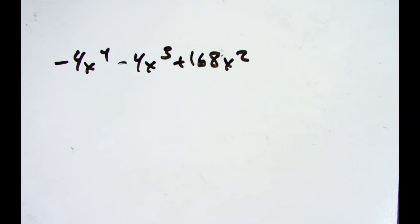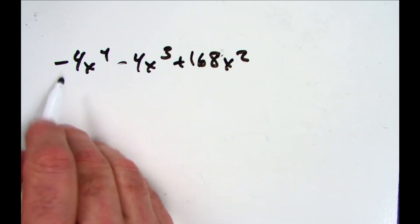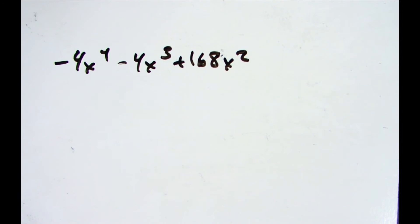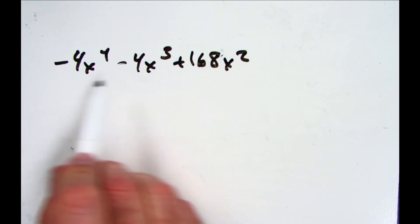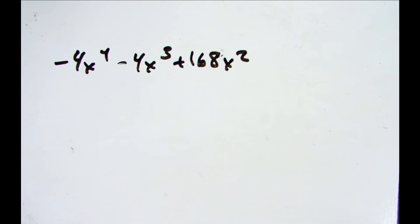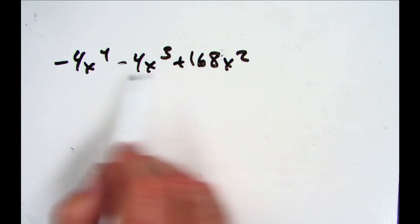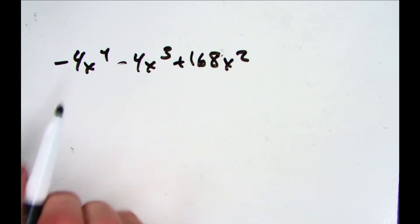Every once in a while we can go a little bit further. Here's our last and scariest looking example: -4x⁴ - 4x³ + 168x². Those numbers are so big they're hard to say. Now let's look: greatest common factor, 4 and 4. I grabbed my calculator and find out yep, all three of these are divisible by 4.